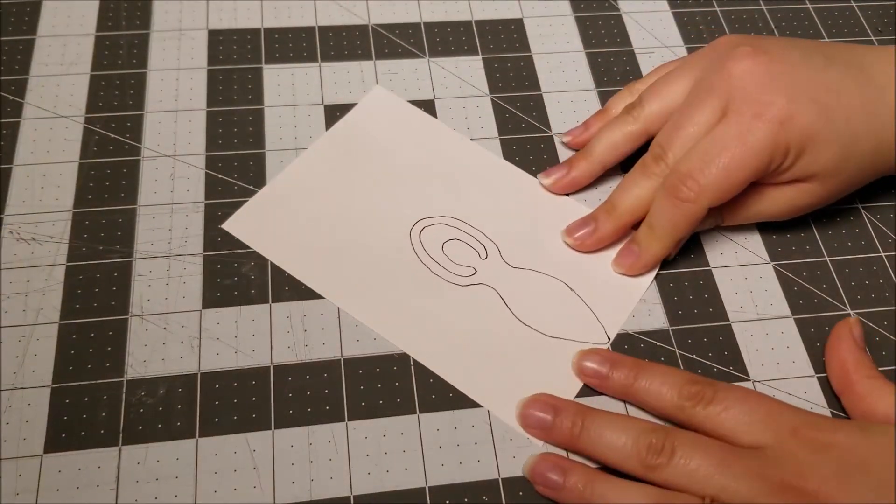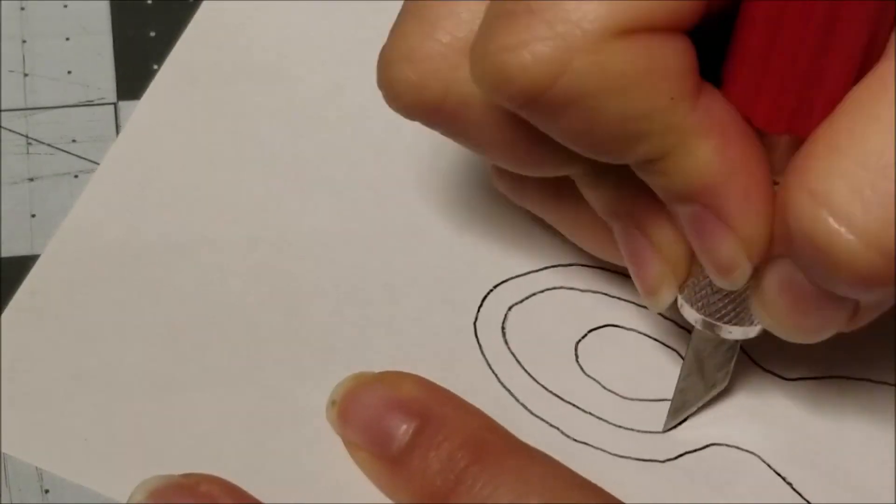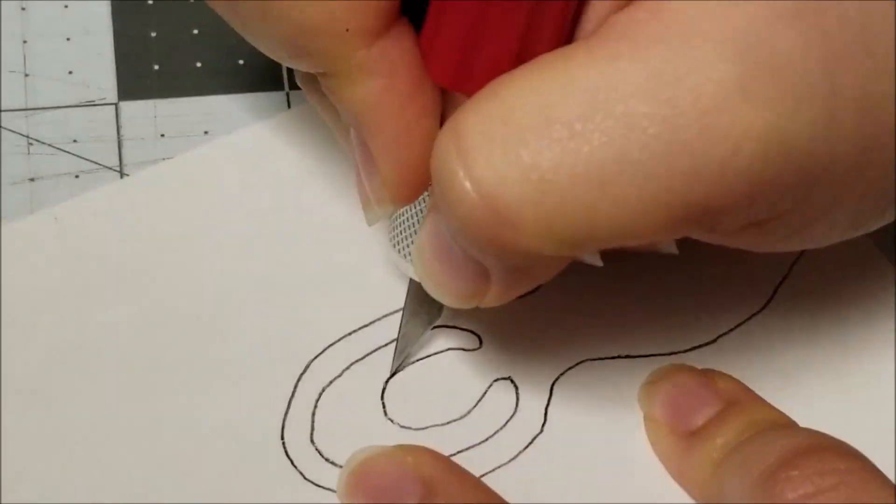I use a crafting knife and cutting mat to cut out my design. It's important to start with the finer details or smaller cuts. The more the paper becomes unstable, the more likely those parts will rip, so take care of them first.